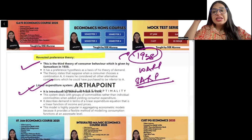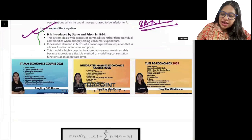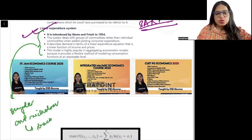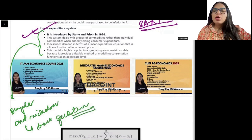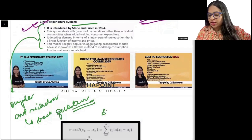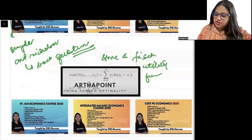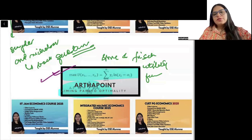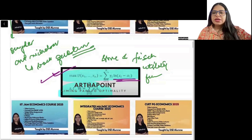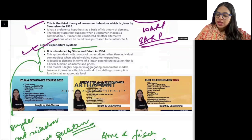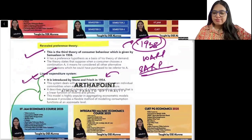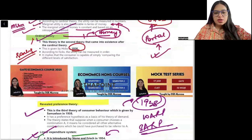And finally we have the linear expenditure system. If you look at the Snyder and Nicholson book, in the back chapters it discusses a utility function called the Stone-Geary utility function. It is a linear utility function where everything comes in log form. This was given by Stone and Geary in 1954. So based on that, the chronological order is: cardinal, ordinal, revealed, and then linear.